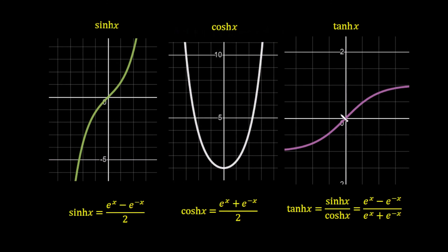Another way of writing these functions is in terms of the exponential function, which will be very handy when we generate the exponential function using the CORDIC algorithm. Sinh x equals (e^x minus e^(−x)) / 2. Cosh x equals (e^x plus e^(−x)) / 2. And tanh x is obtained by dividing sinh by cosh, giving the corresponding identity. Let's quickly put these into the graphical calculator and see these curves appearing.